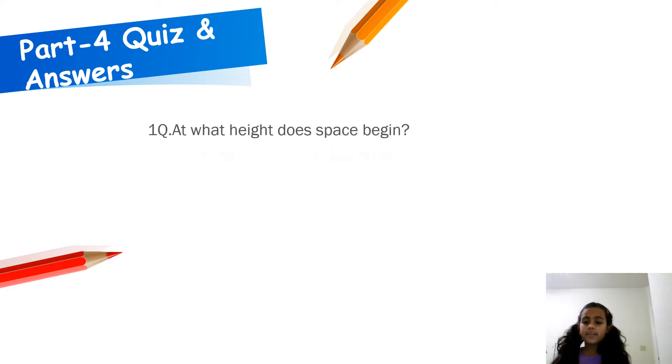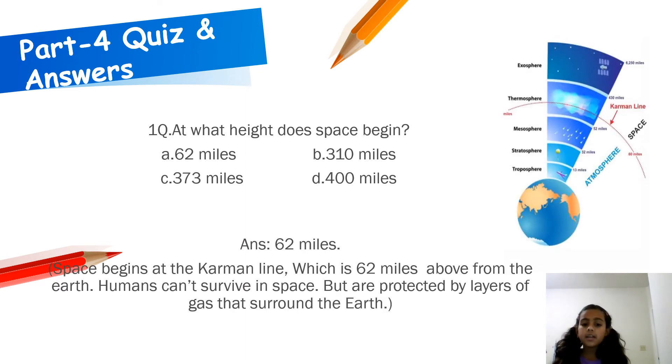Part 4 Quiz and Answers. Question 1. At what height does space begin? A. 62 miles. B. 310 miles. C. 373 miles. D. 400 miles. Answer: 62 miles. Space begins at the Kármán line, which is 62 miles above from the Earth. Humans cannot survive in space, but are protected by layers of gas that surround the Earth.